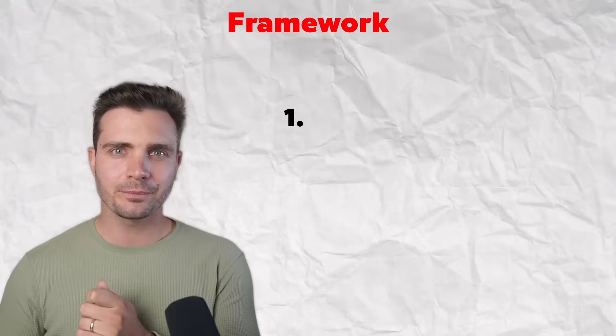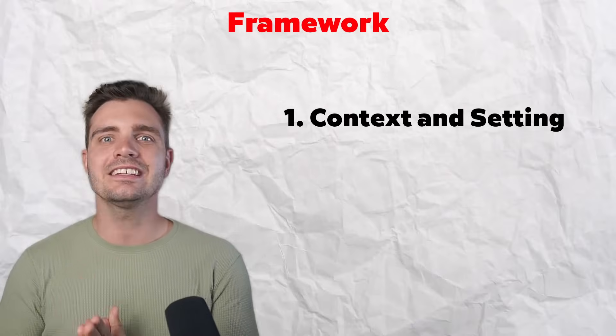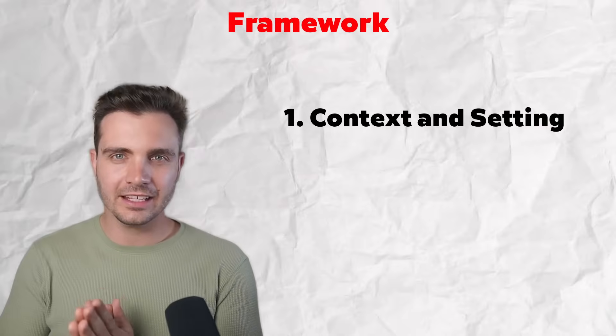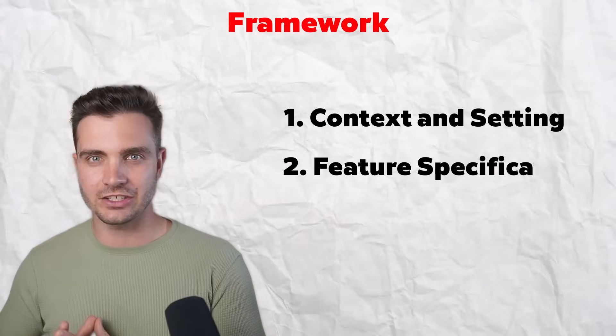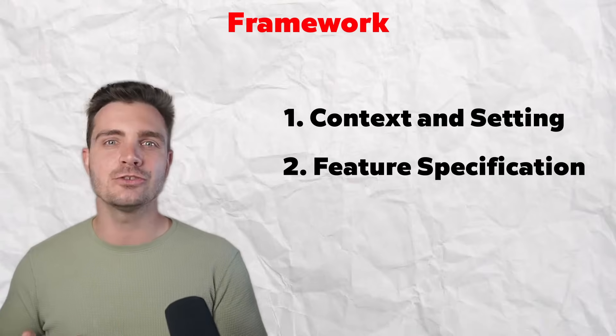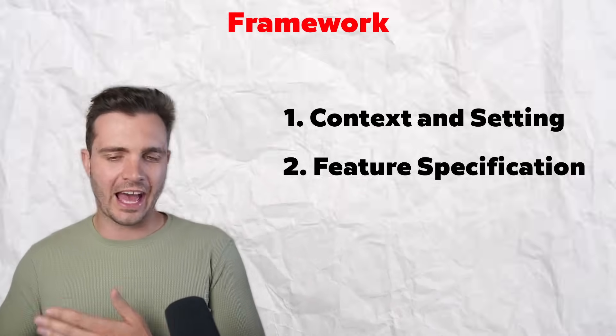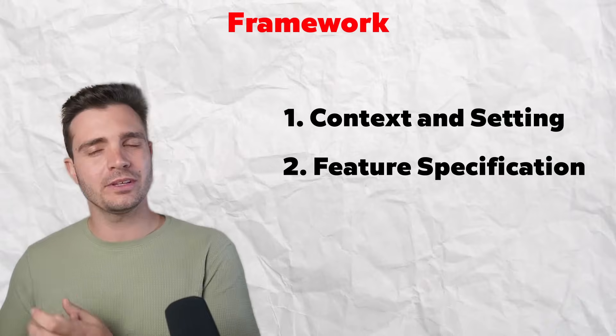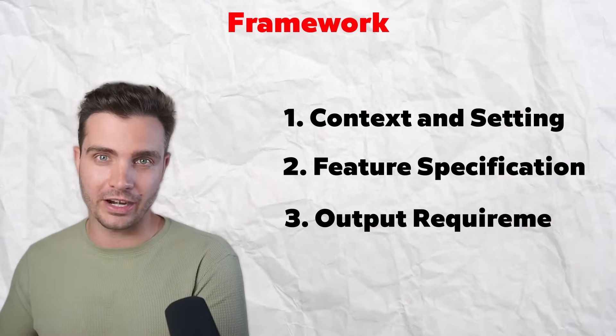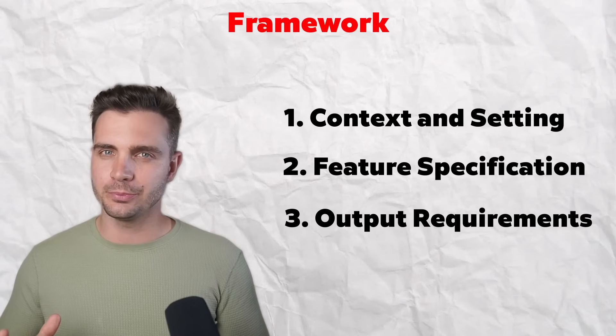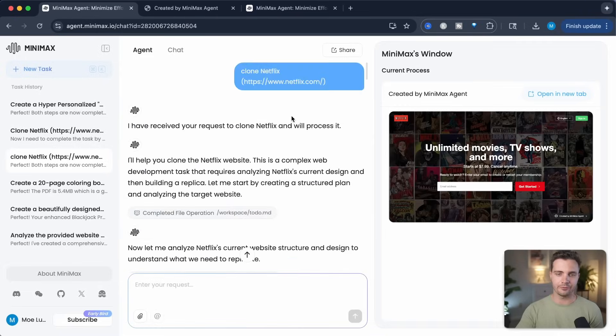Now here's the secret — it's not just about Minimax Agent, it's about how you structure your prompts. I discovered a specific framework that gets consistently amazing results. The framework has three parts. First: context and setting — tell it exactly what type of business foundation you're building. Second: feature specification — be very specific about the functionality and user experience, describing the actions or habits of the user. Third: output requirements — if you have a clear idea of what the output should be, describe it in as much detail as possible. For the simple Netflix clone, I just typed four words.